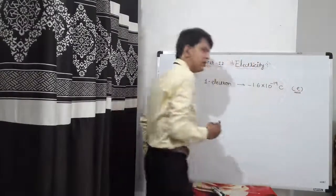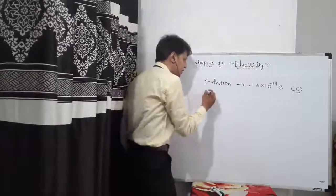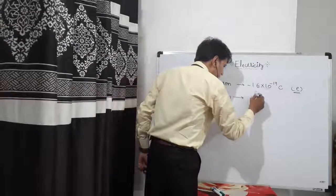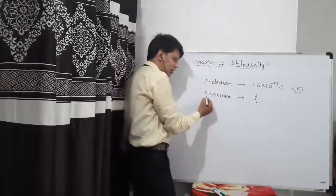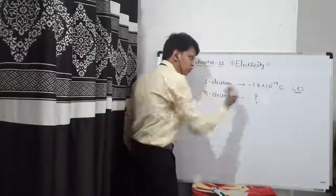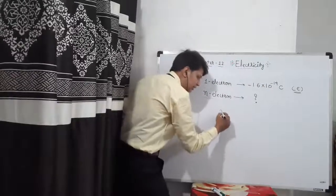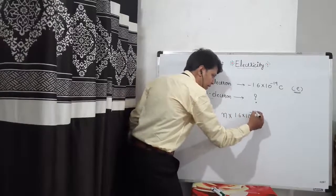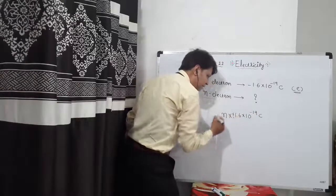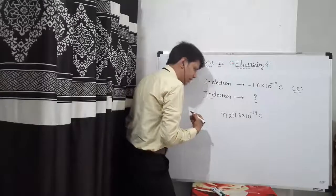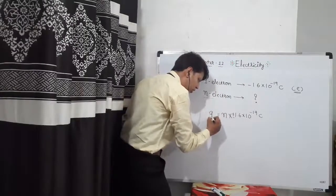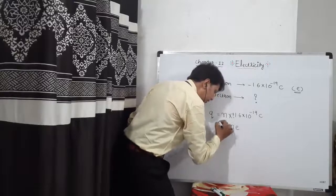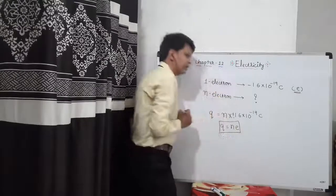Fundamental charge is always mentioned by symbol E. So, if there are n number of electrons, then the charge on n number of electrons would be n multiplied by E, that is n multiplied by 1.6 into 10 to the power minus 19 coulomb, plus or minus depending on whether it is positive or negative charge. The equation is Q is equal to n into E.